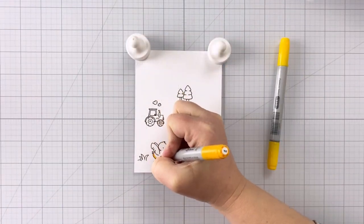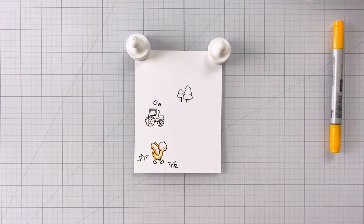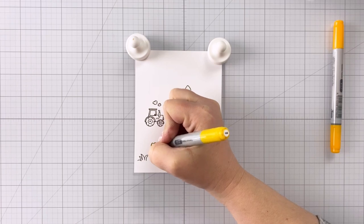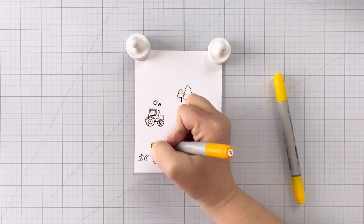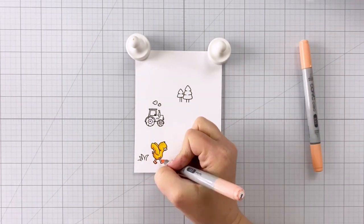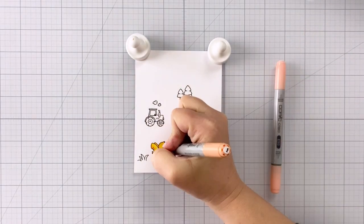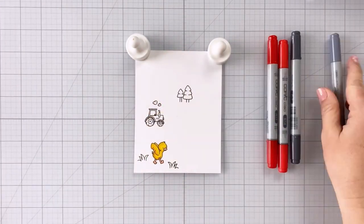Once I have those stamped I'm going to set them aside and color my images. You can color as you go which is what I'm doing or you can wait and color everything at the end. I'm starting with my cute little duck and I'm coloring him in Y15 and Y17 and then for his little bill as well as his legs and feet I'm using E93 and E95.